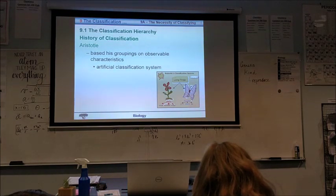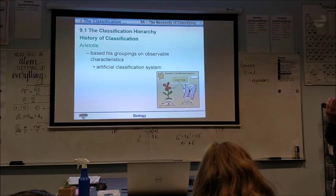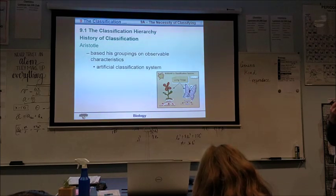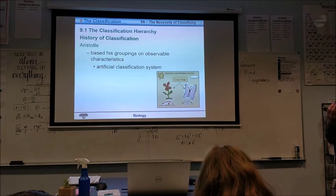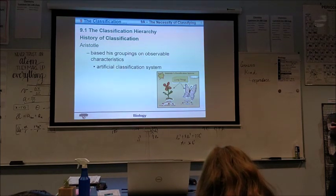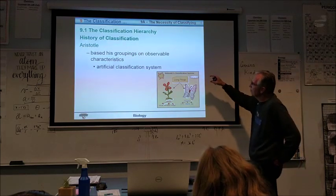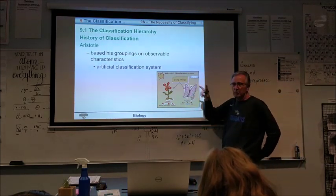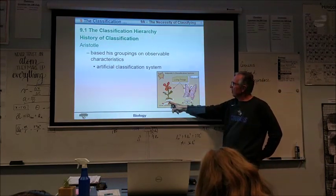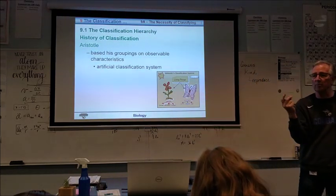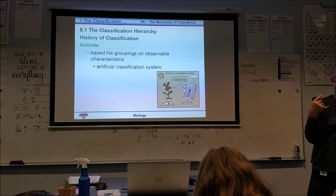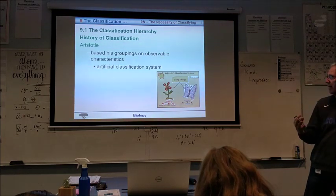And if we find two people that look alike, that doesn't automatically mean that they're actually brother and sister or related necessarily. They just happen to look alike. So, here was his classification. He broke all living things into two categories. One he called plants and one he called animals. So, he only had two big groups, plants and animals. We have more groups than that today. But that's what he had.